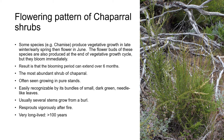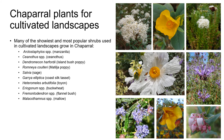Many of the most popular California native shrubs for cultivated landscapes are found in Chaparral. You can see some of them pictured here, with a dominant white, yellow, gold, and purple color theme. These include Manzanita, Bush Poppy, Ceanothus, Matilija Poppy, Salvias, Flannel Bush, Mallows, and some of the Buckwheats.